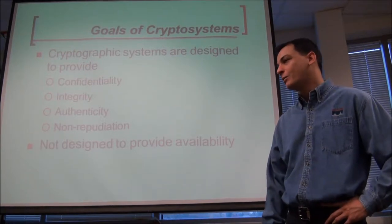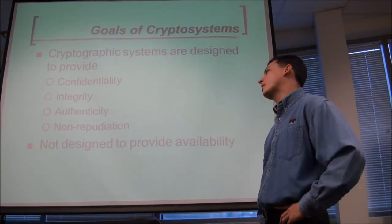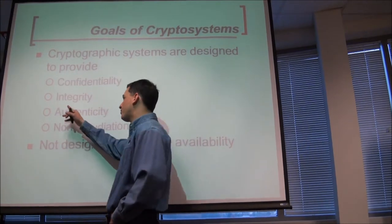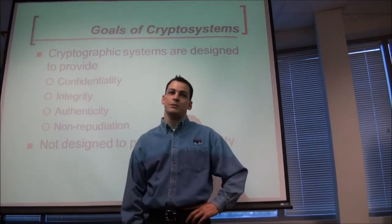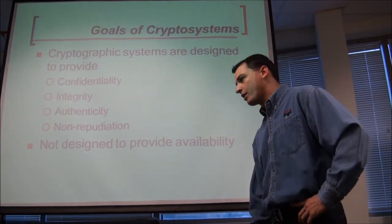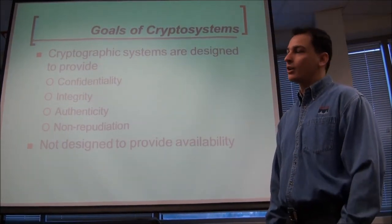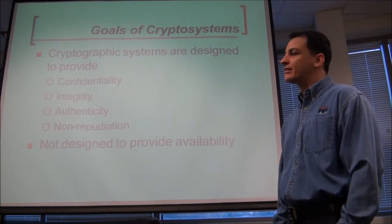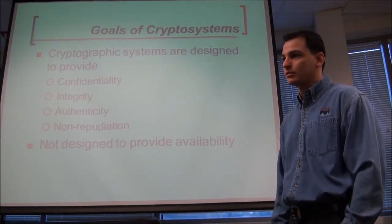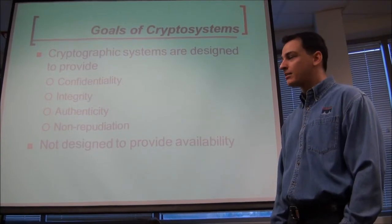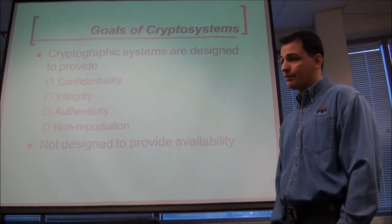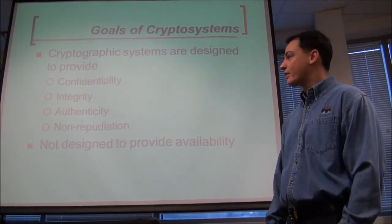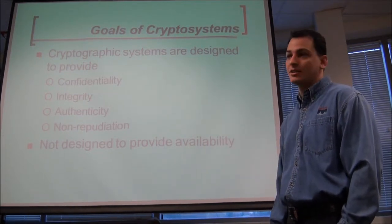The majority here will be confidentiality. Write this down: symmetric only deals with confidentiality — only. Asymmetric algorithms, because of your private key that only you have, give you confidentiality, integrity, authenticity, and non-repudiation. One of the strengths of symmetric is that it does confidentiality very, very efficiently. But the problem with symmetric is that it doesn't address integrity, authenticity, or non-repudiation.